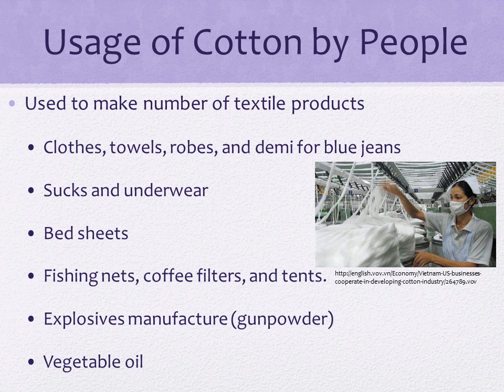Cotton is used to make a number of textile products including clothes, towels, robes, and denim for jeans. It's also used to make bedsheets, socks, and underwear. In addition to the textile industry, cotton is used in fishing nets, coffee filters, tents, and explosive manufacturing such as gunpowder. The cotton seed is used to produce cottonseed oil which, after refining, can be consumed by humans like any other vegetable oil.